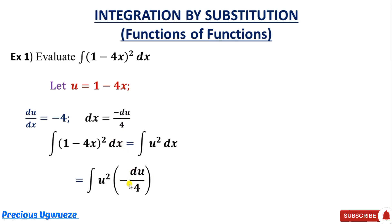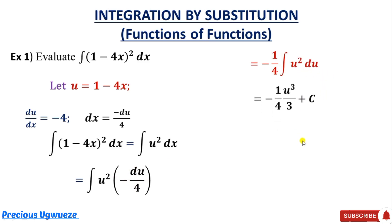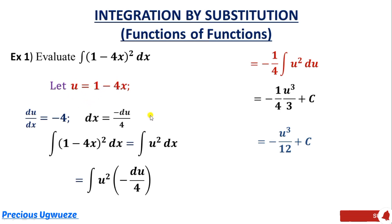Once you finish the substitution, the next step is integration. We simplify by bringing the constant out of the integral — the constant is minus 1 over 4 — leaving only u squared du. Integrating by adding 1 to the power, we get u raised to power 3 over 3, plus constant c. Simplifying, we multiply out to get minus u cubed all over 12, plus c.